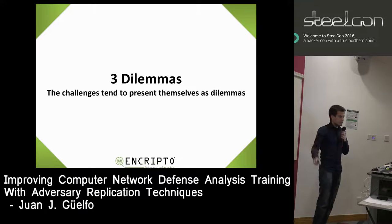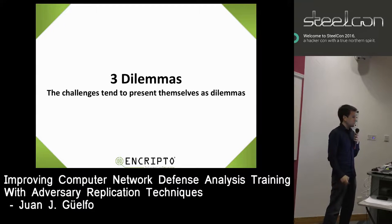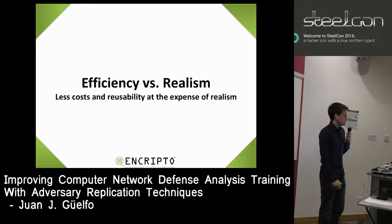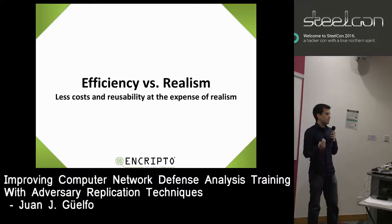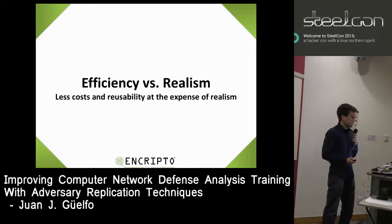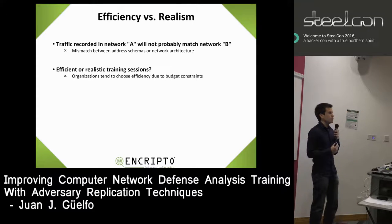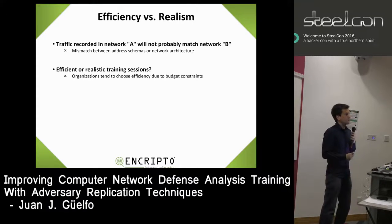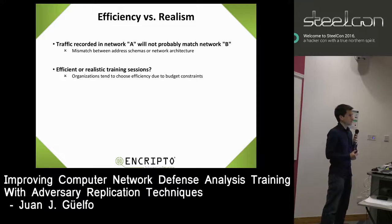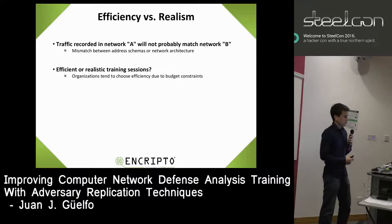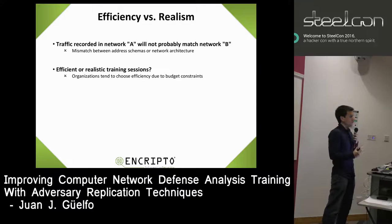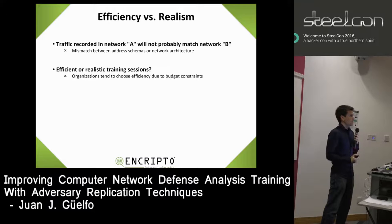The challenges tend to present themselves as dilemmas. The first is efficiency versus realism: trying to have lower costs when preparing and conducting training sessions, but this impacts the realism. Think about reusing recorded network traffic captured in network A — when you try to use it in your network, it will probably have mismatches in network addresses, architecture, and so on. Companies facing this dilemma tend to say it's better to run a little more efficiently because they have to take care of the budget.